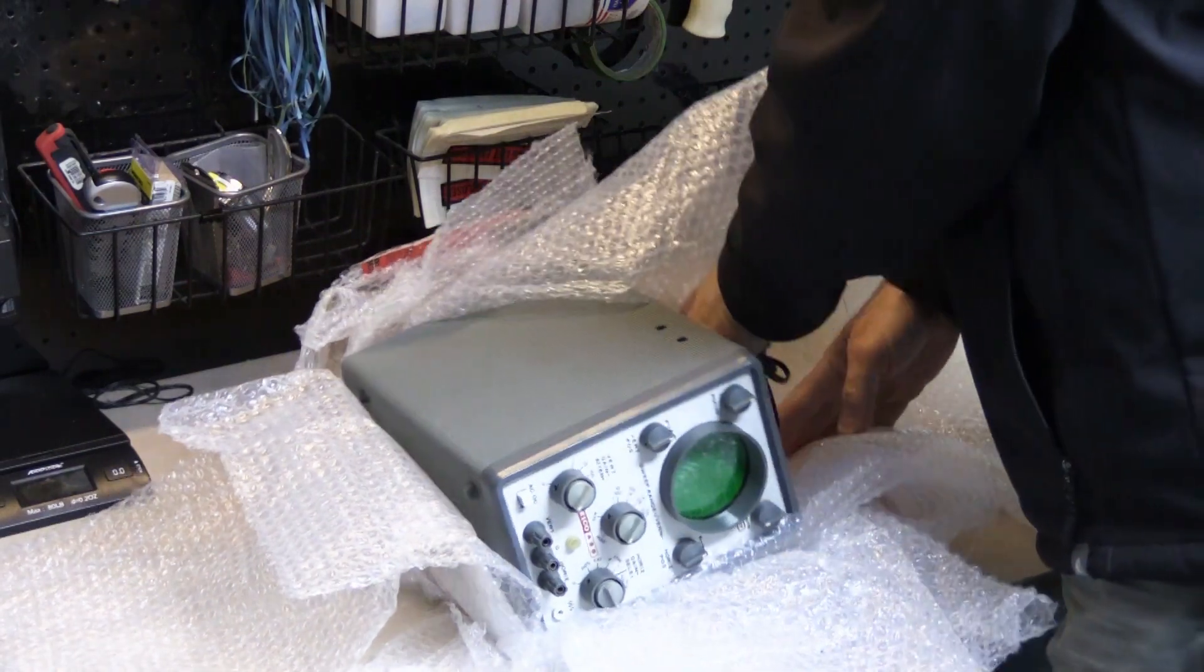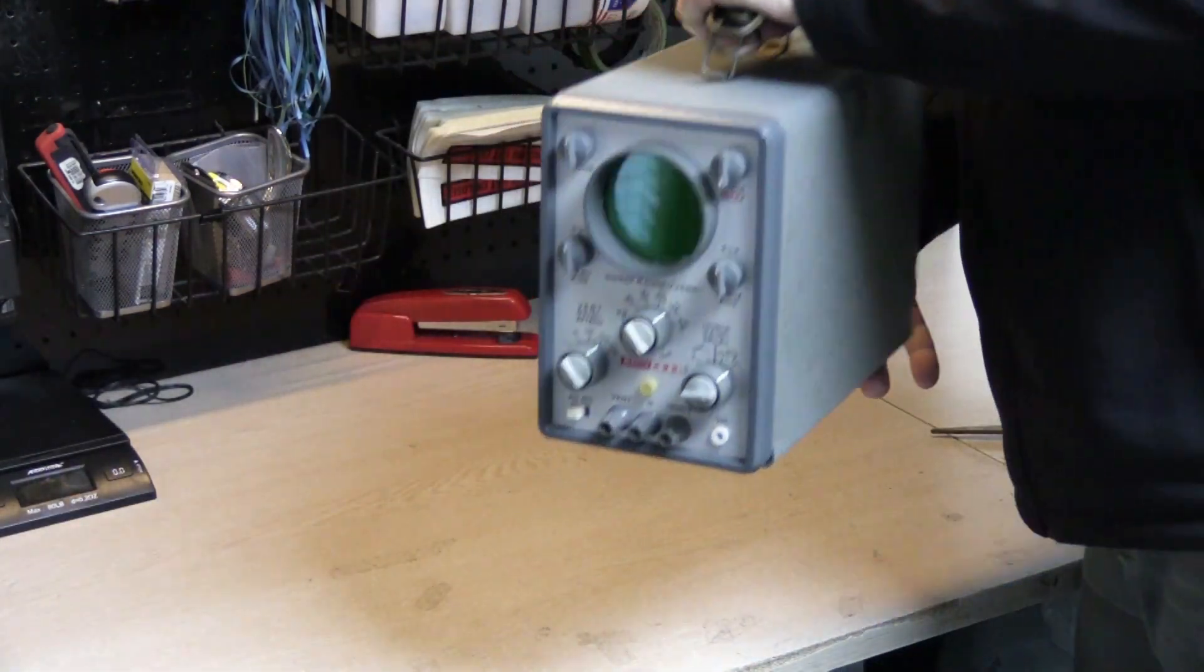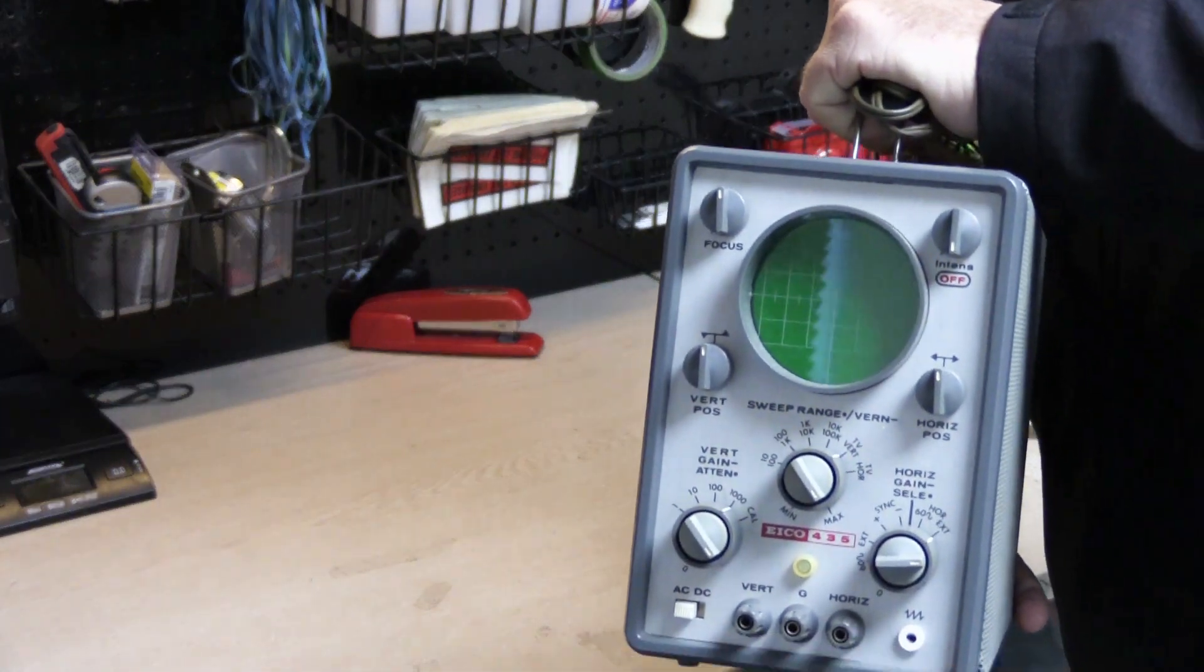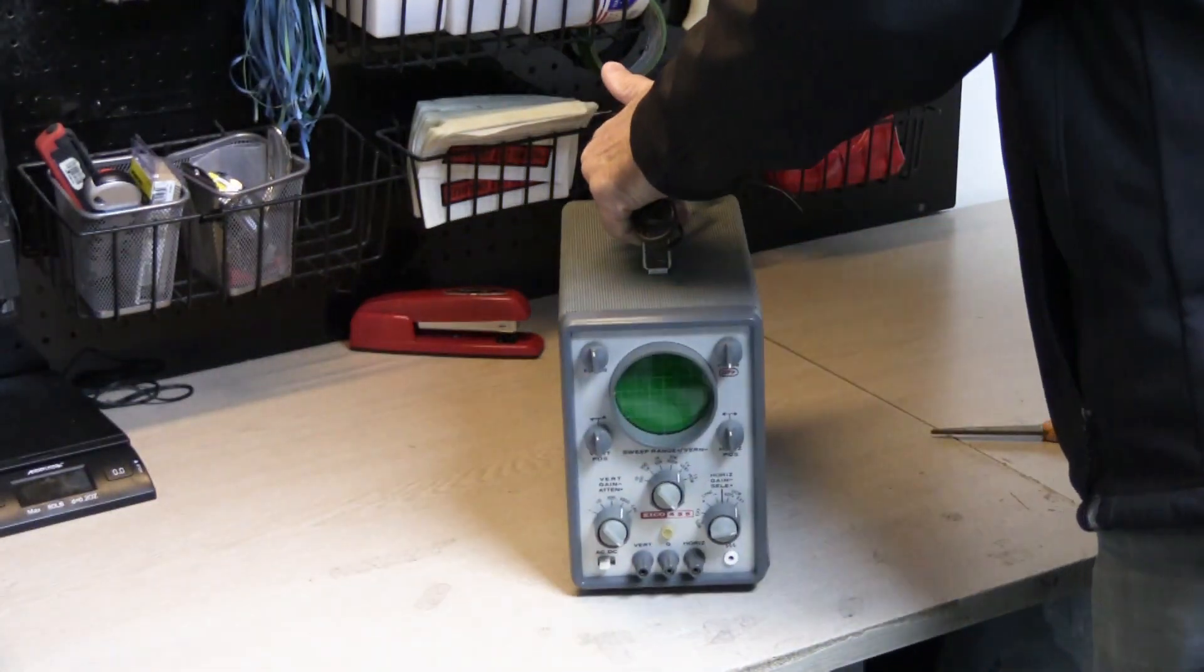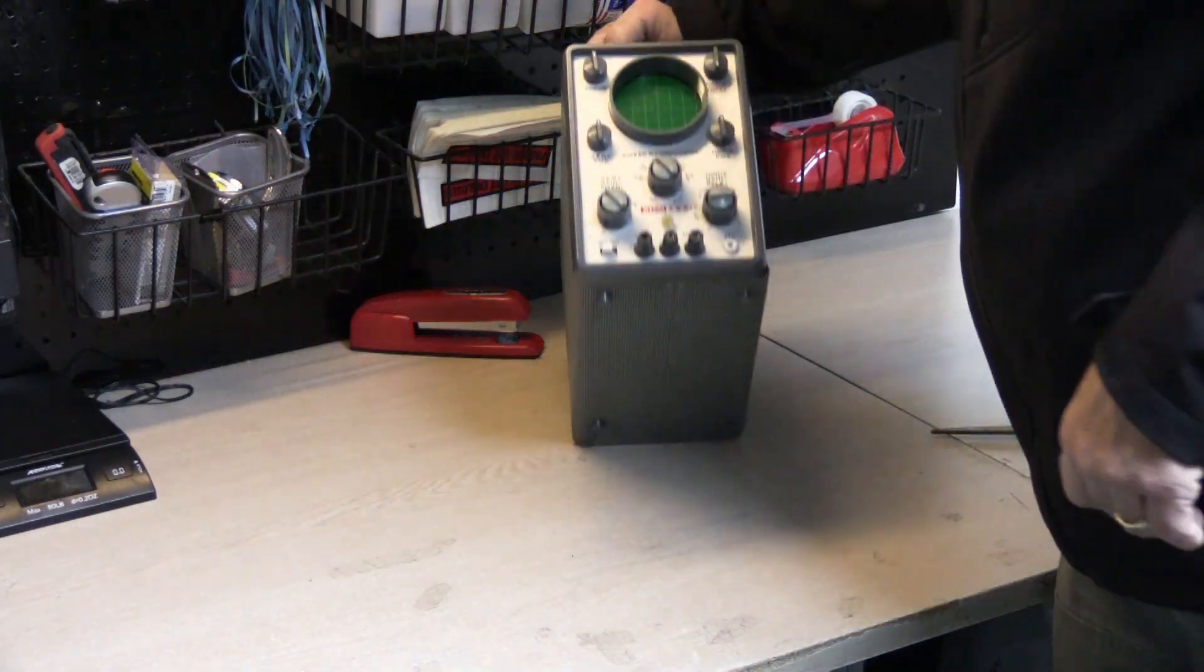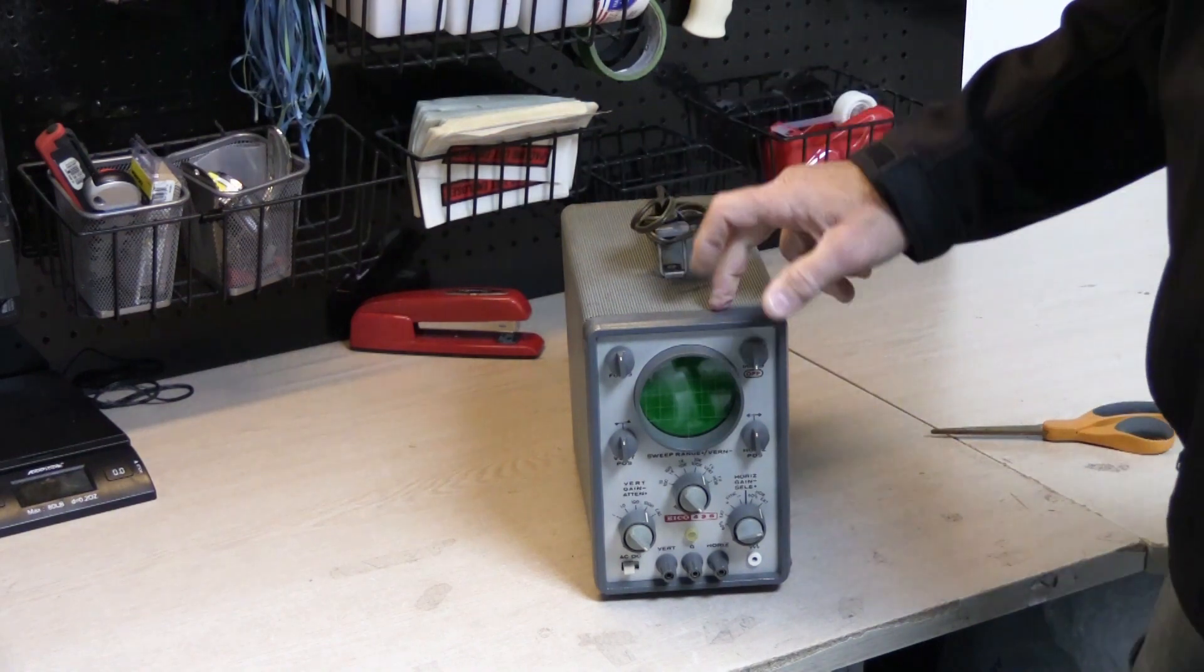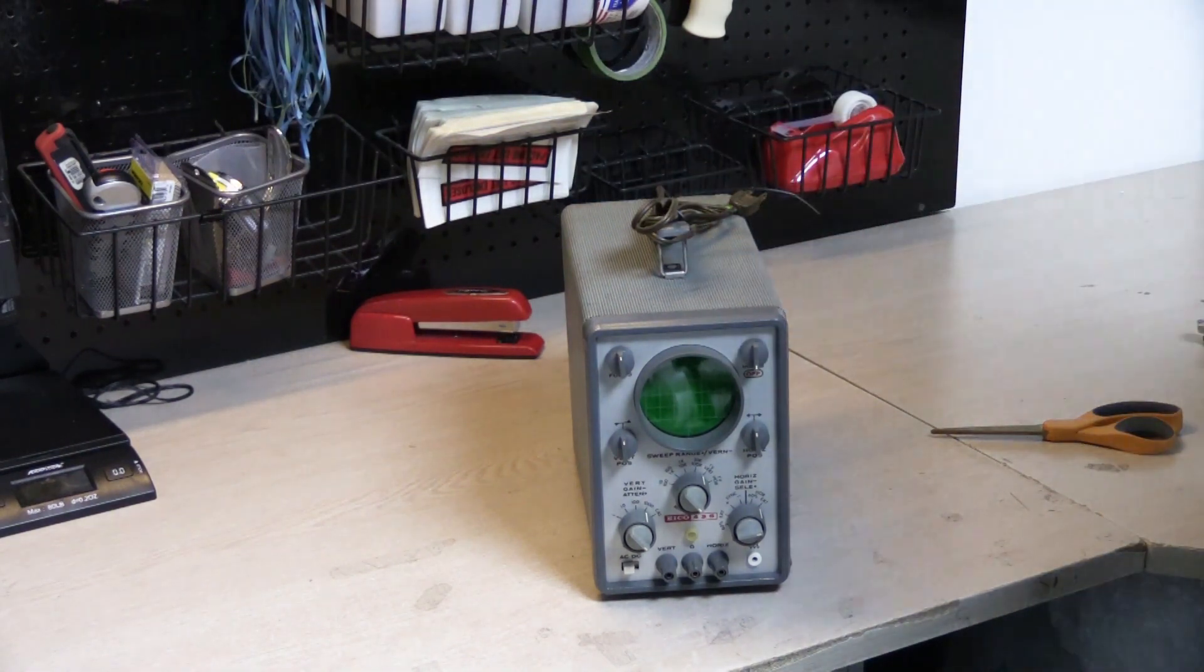So what we have here is an old analog oscilloscope. This is an Ico model 435 and I've been looking for one of these specifically for quite a while now.